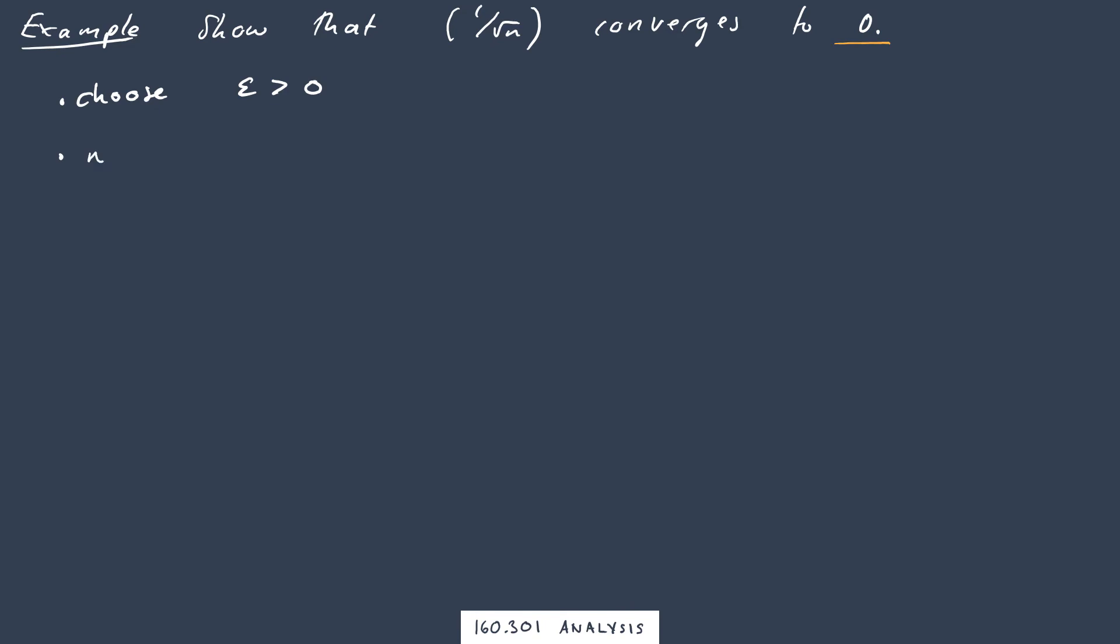now we need to find an N such that the absolute value of our sequence minus our limit value, which we're hoping exists, is less than our epsilon for all little n's greater than or equal to big N. For this particular case, we might take this inequality here, and we know that N is positive, so we can strip away the absolute value signs. This means that 1 over root N is less than epsilon. Which means alternatively that N is greater than 1 over epsilon squared. So we're doing a little bit of scratch working down here.